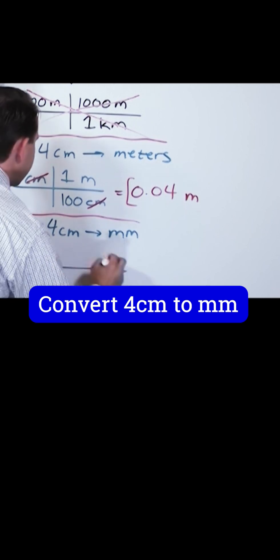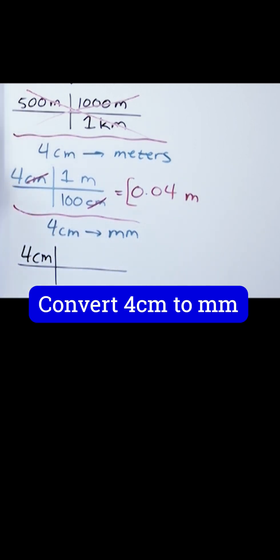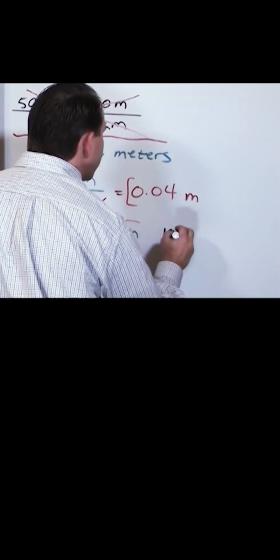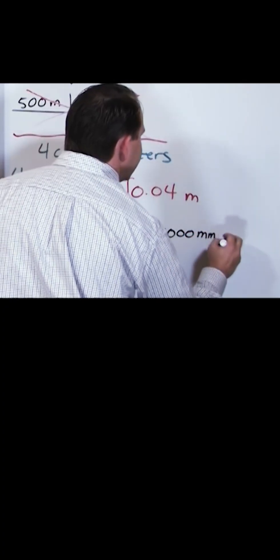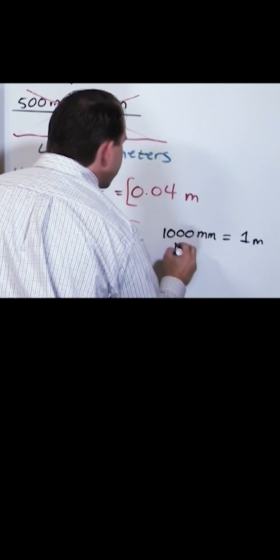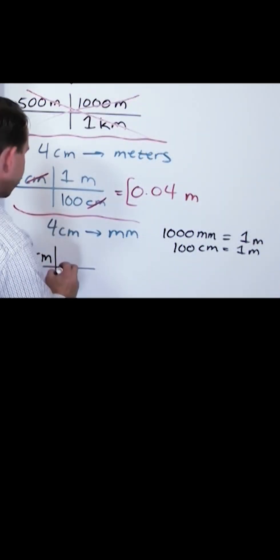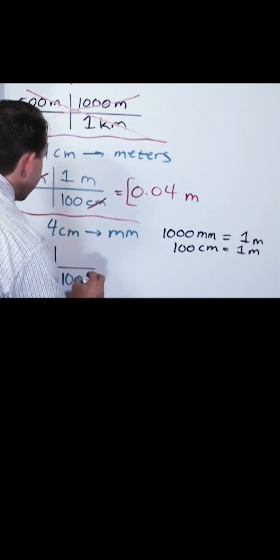You have four centimeters, and unless you're good with the metric system, you may not know off the top of your head how many millimeters are actually in a centimeter. What we do know is 1000 millimeters is equal to one meter, 100 centimeters is equal to one meter.